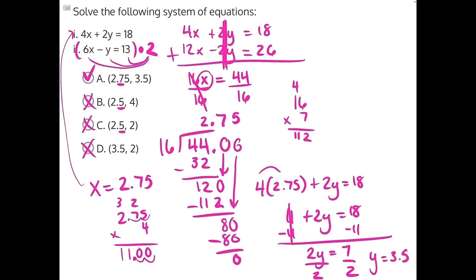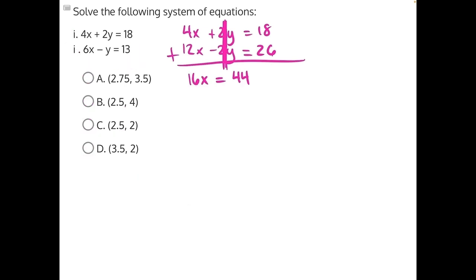Now if we wanted to use the substitution method, we would want to target this variable right here because it doesn't have a coefficient and is very easy to move around. So let's start with 6x minus y is equal to 13 and isolate that y. We'll need to add it to both sides using opposite operations. These will cancel, giving us 6x is equal to 13 plus y. Then we'll need to do opposite operations again to get rid of the 13 and leave y isolated on its own.